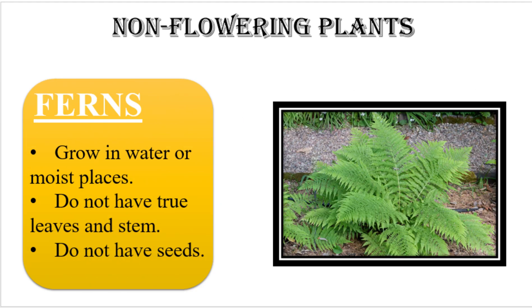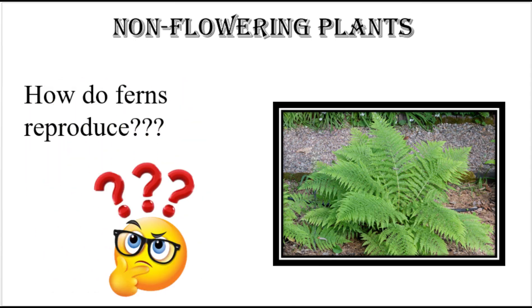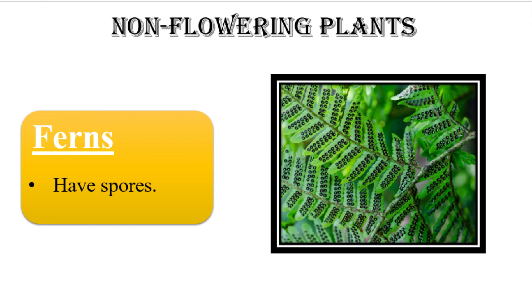Let's talk about ferns. Just like mosses, ferns also grow in water or moist places. They do not have flowers, they do not have seeds, and they do not have woody stems. Since ferns do not have seeds, how do they reproduce? Just like mosses, ferns also have spores. In ferns, spores are present at the underside of the leaves, as you can see in the picture. Spores are the small cells that grow into a new plant. If there is any confusion, do write your question in the comment section.